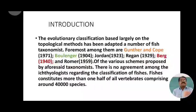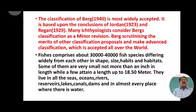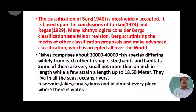The classification of Berg (1940) is the most widely accepted classification. It is based upon the conclusions of Jordan (1923) and Reagan (1929). Many ichthyologists consider Berg's classification as a minor revision, with some workers scrutinizing its merits and making minor corrections before using it.